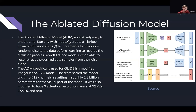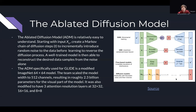The ADM model used for Glide is a modified ImageNet 64×64 model — a UNET. The team scaled the model width to 512 channels, resulting in about 2.3 billion parameters for the visual portion of the model. It was also modified to have three attention resolution layers at 32×32, 16×16, and 8×8. You can see in the diagram how it steps forward into noise and then steps back — the dotted line represents the approximation that can be created from the noise image after training.